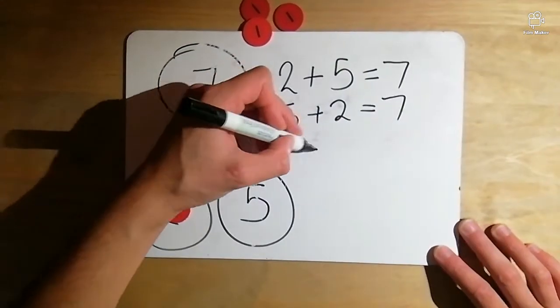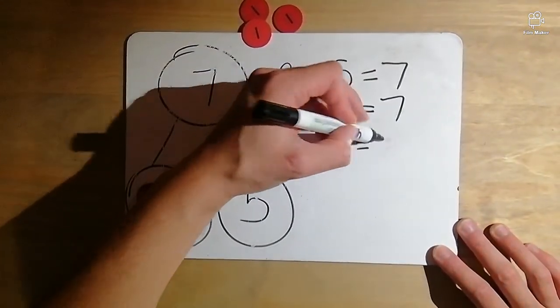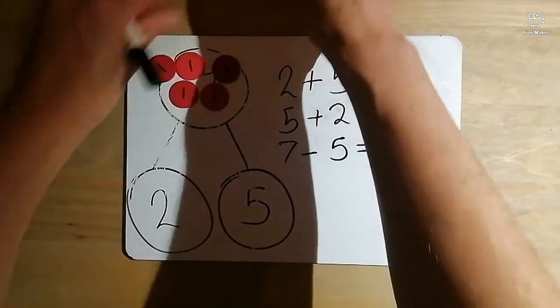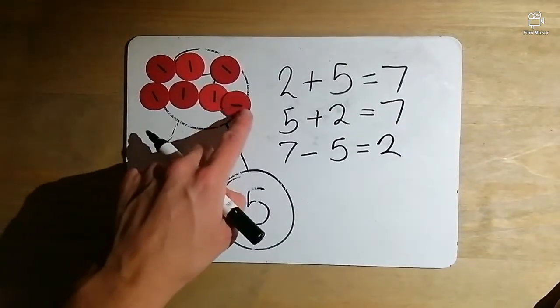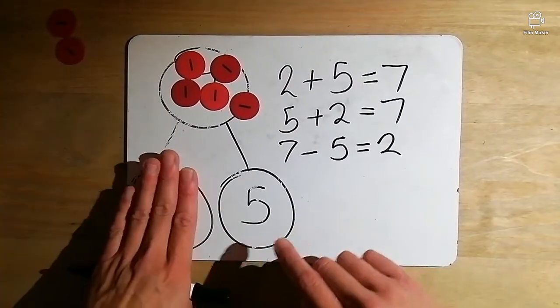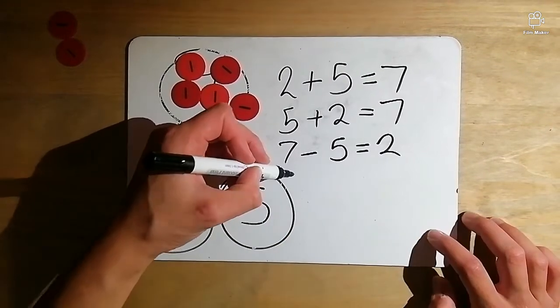So seven take away five equals two and I'm sure you've guessed it by now. The last one that we can see here is seven take away two leaves us with five.